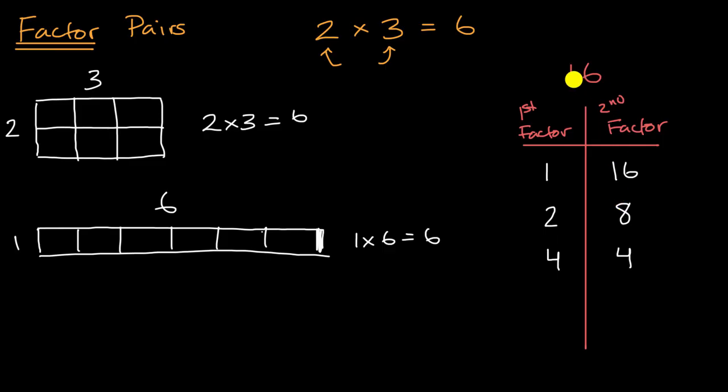What about eight? Well we already know that eight goes evenly into 16. You might be tempted to say, oh there's another factor pair of eight times two, but we already wrote that down. We just happened to say that two is the first factor and eight is the second factor, but you could say it the other way around, so we don't have to then go to eight times two. And once you've gone halfway, you can be confident that you've already found all the factor pairs, because then you could go to nine through 15, but then 16 of course is divisible by 16, but we've already written that here in this factor pair. So we have these three factor pairs, one and 16, two and eight, and four and four.